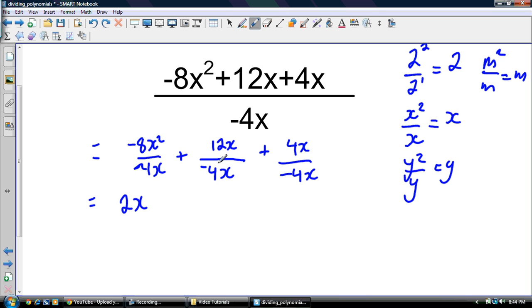Then I got 12x divided by negative 4x. So that's 12 divided by negative 4. That's going to be...I shouldn't have wrote that there. Brain fart. So that's going to be negative 3. And x divided by x.